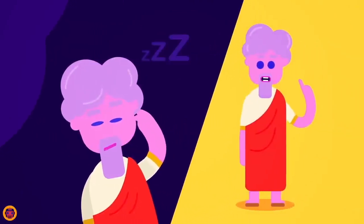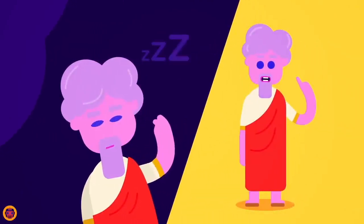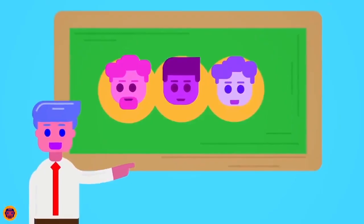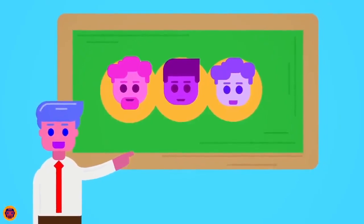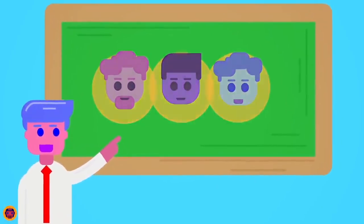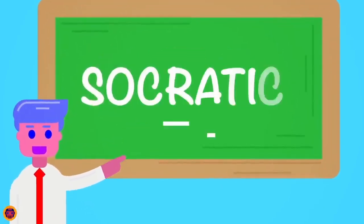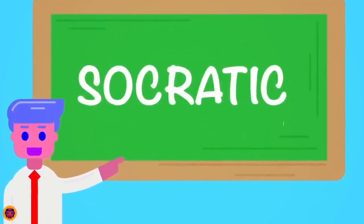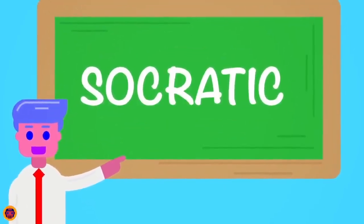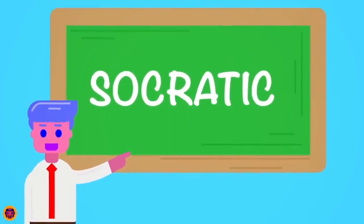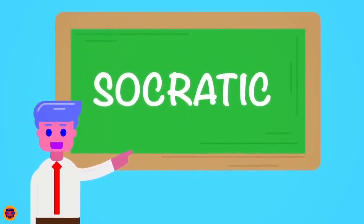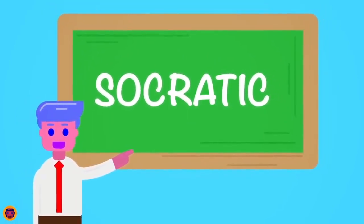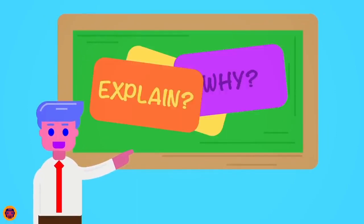Socrates began the dialogue by asserting or feigning ignorance in what is called the ironic phase, and then presenting his thesis to the pupil. He then refuted the arguments of the pupil, in the refutation phase, and posed brief questions expressing his doubts, in what we call brachiology.